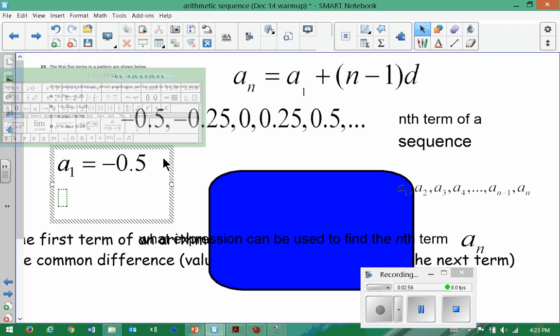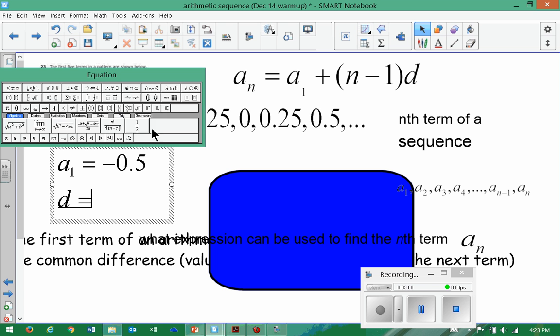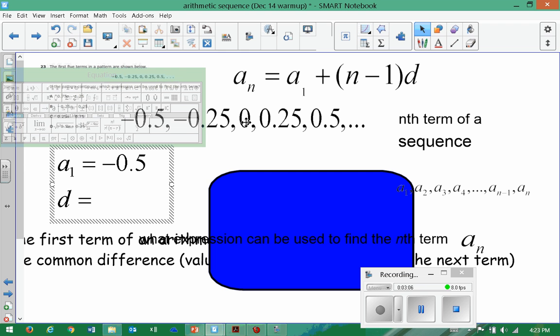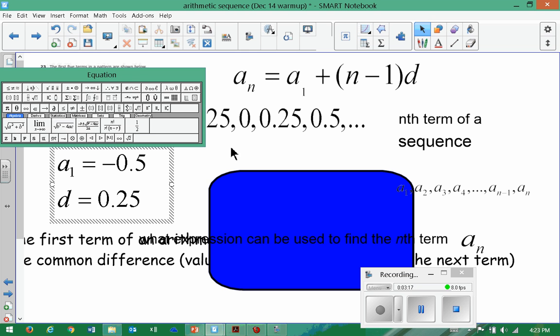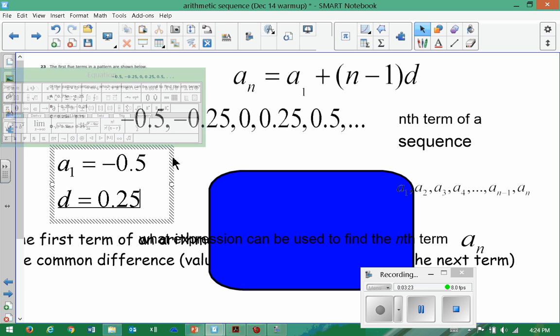And then let's look at what our common difference is. Our common difference is, if you look, especially if you look at the third term and the fourth term, we are clearly adding 0.25 every time. So I'm going to put 0.25 as our common difference. And even with the negatives, we are still adding 0.25. It becomes more obvious than the positive side. But we're doing the same every time.